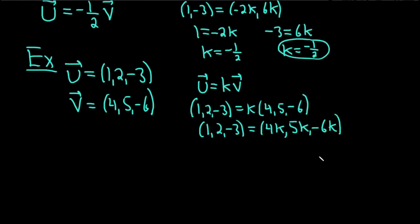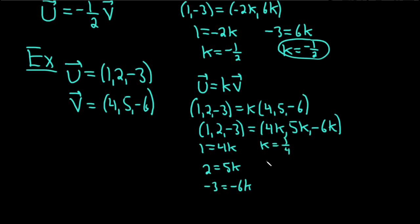Again, two vectors are equal when their components are the same. So we get 1 equals 4k, 2 equals 5k, and negative 3 equals negative 6k. Solving: k equals 1/4 from the first equation, and k equals 2/5 from the second. These are not the same, so we don't even need to check the third. The answer is no — these are not linearly dependent; they are independent vectors.